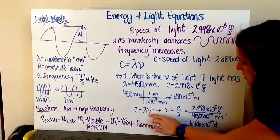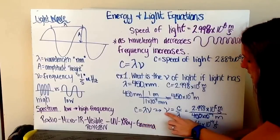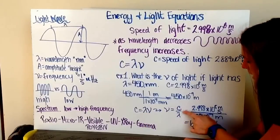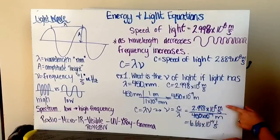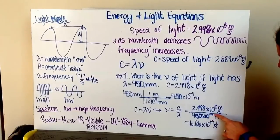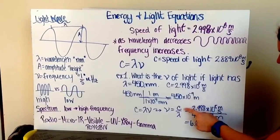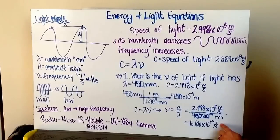Then I arrange my equation to solve for frequency, dividing both sides by lambda. I get frequency equals speed of light over lambda, which is my wavelength. I plug in my variables. My speed of light is 2.998 times 10 to the eighth meters per second. My wavelength is 450 times 10 to the negative ninth meters. When I plug this into my calculator, I get a frequency of 6.66 times 10 to the 14th inverse seconds, or hertz.